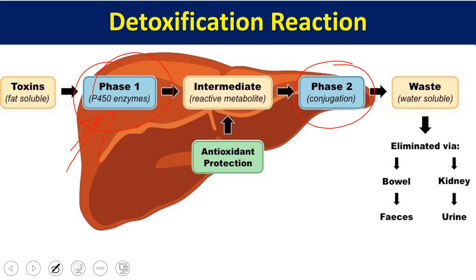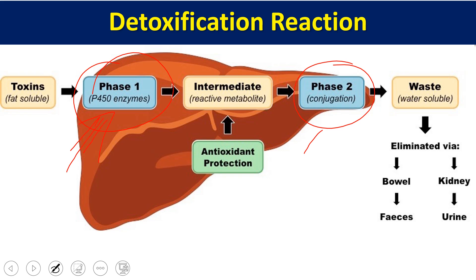Phase 1 is called the bioactivation reaction, where we normally make a substance more active by doing some kind of chemical reaction. Three important chemical reactions occur in Phase 1: oxidation, reduction, and hydrolysis. The activated chemicals from Phase 1 then go to Phase 2, which is called the conjugation reaction.